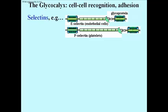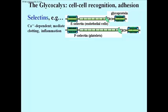The selectins use their lectin moiety — their lectin domain, the right green domain at the right end — to recognize oligosaccharide sugars on glycoproteins on other cells. This not only causes recognition but causes the cells to adhere, to stick to one another. This process depends on calcium. Selectins can mediate coagulation or clotting, and also inflammation, where cells come together during wound healing.